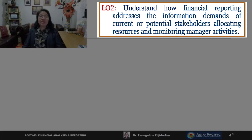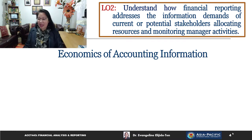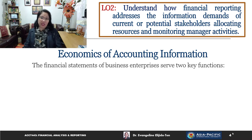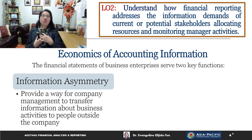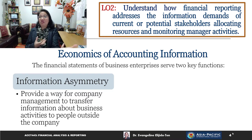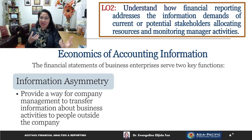In Learning Objective 2, we'll understand how financial reporting addresses the information demands of current and potential stakeholders allocating resources and monitoring manager activities. Let's start with the economics of accounting information. Financial statements really serve two key functions. The first one is information asymmetry — if I have information that is not available to the public, that means there is an information asymmetry, meaning I have more information than what other users have.